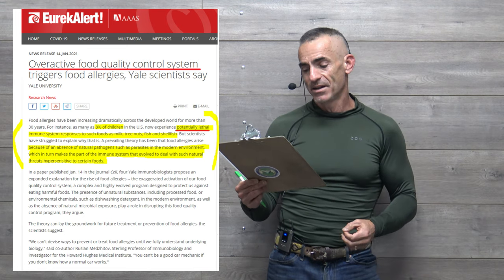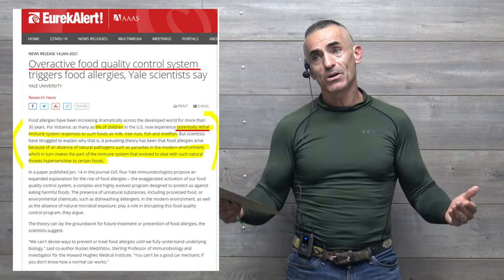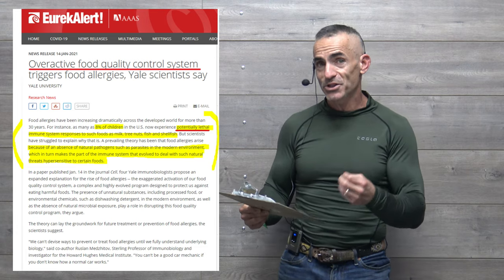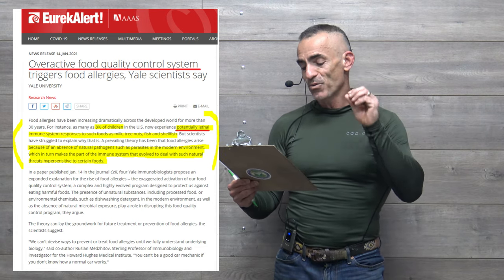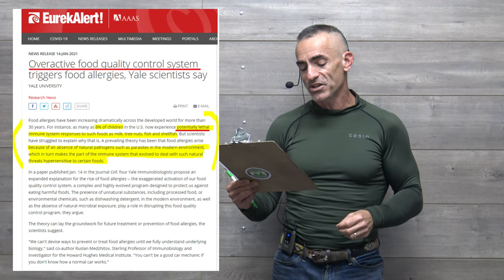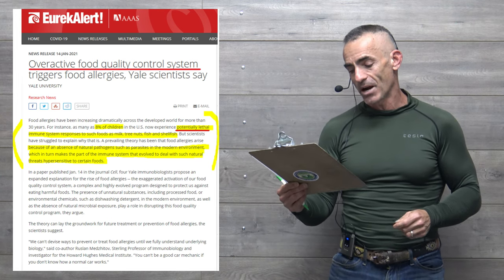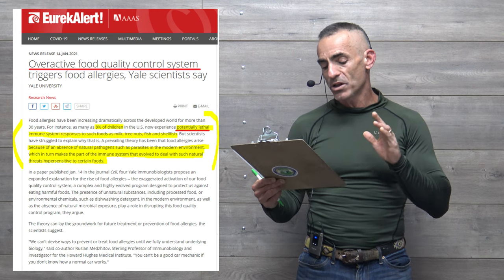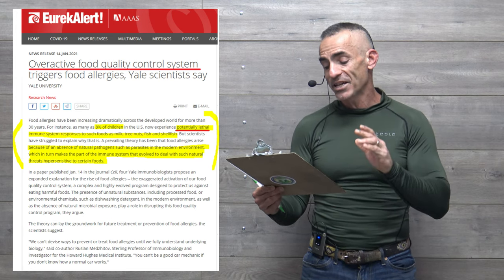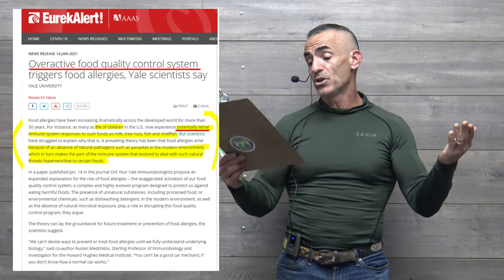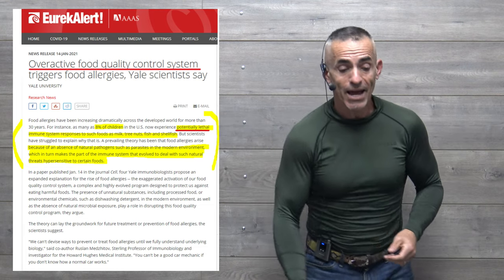Scientists have struggled to explain why that is. A prevailing theory has been that food allergies rise because of an absence—again, this goes back to dysbiosis—because of the absence of natural pathogens such as parasites in the modern environment, which in turn makes part of the immune system that evolved to deal with such natural threats hypersensitive to certain foods.